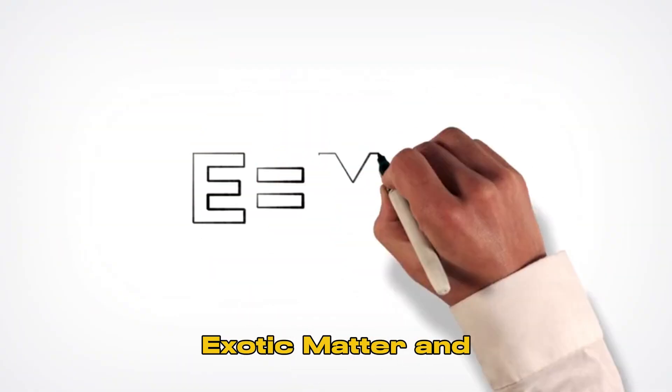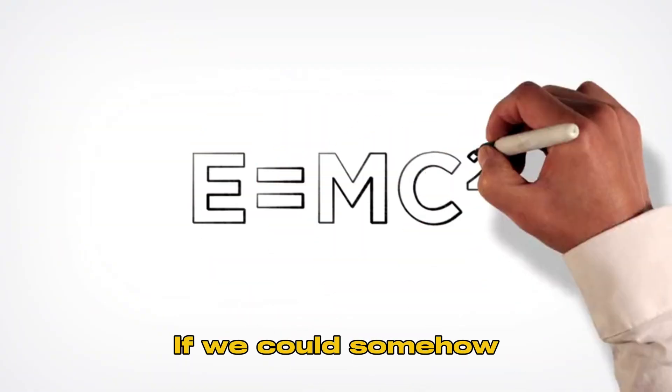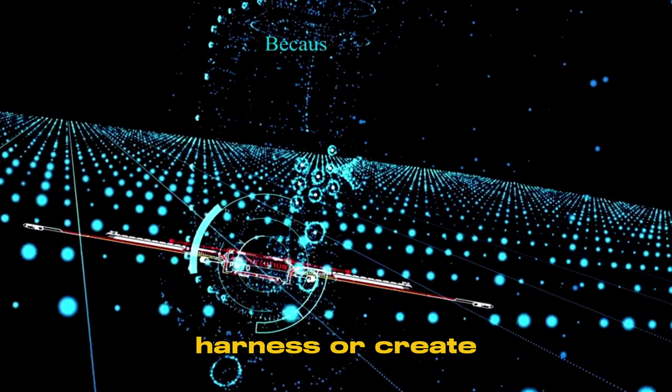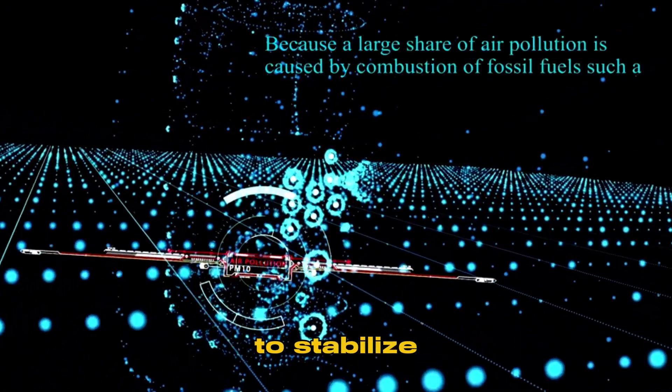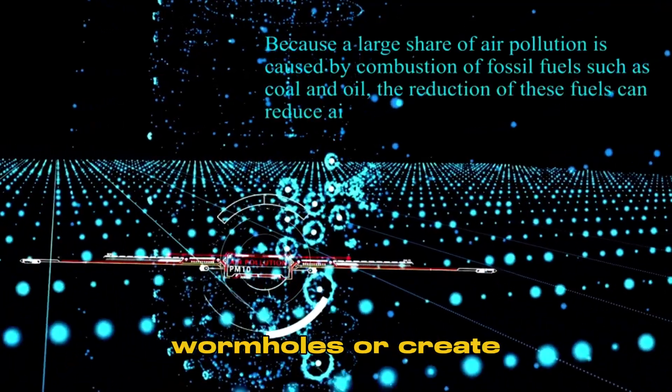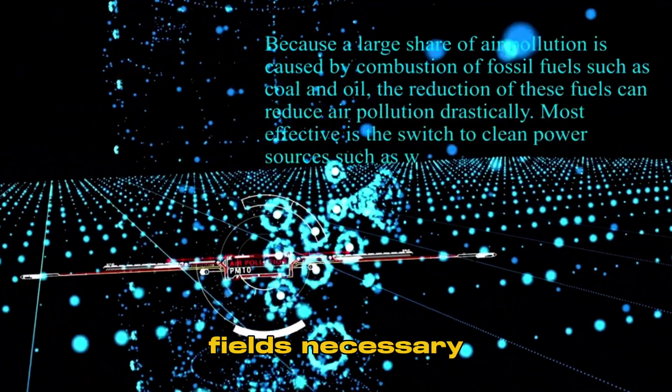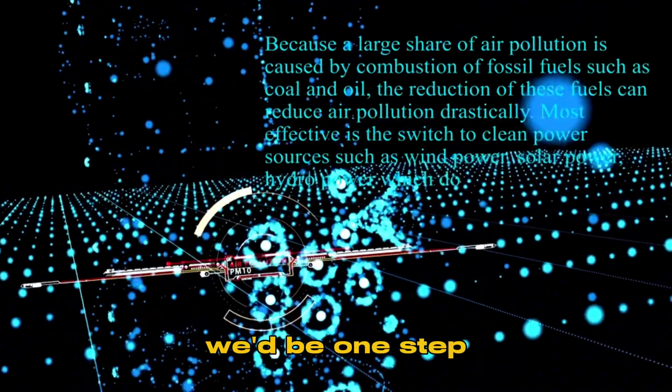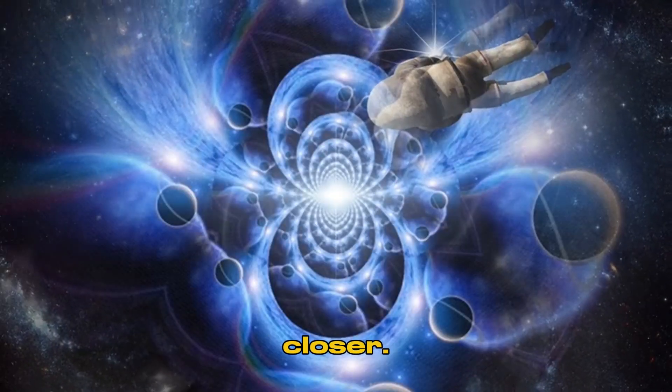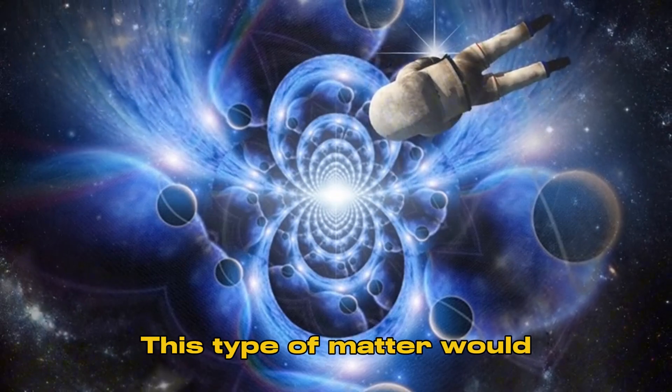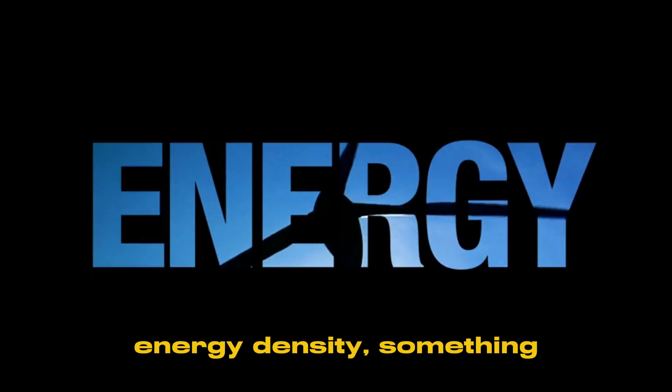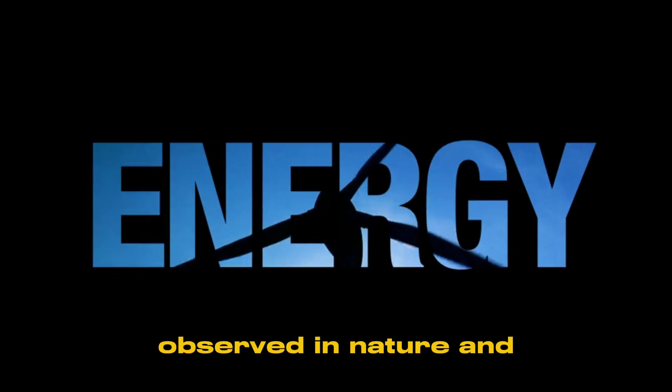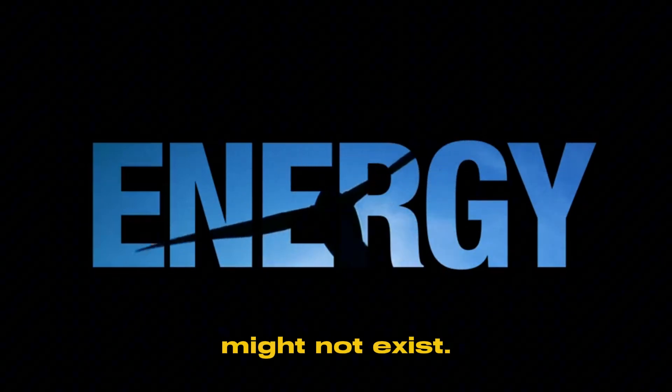Step 2: Gathering exotic matter and energy. If we could somehow harness or create exotic matter, which is required to stabilize wormholes or create the massive energy fields necessary for time travel, we'd be one step closer. This type of matter would need to have negative energy density, something that has not been observed in nature and might not exist.